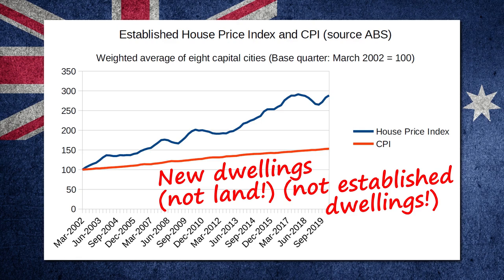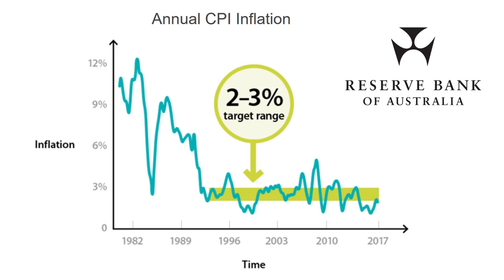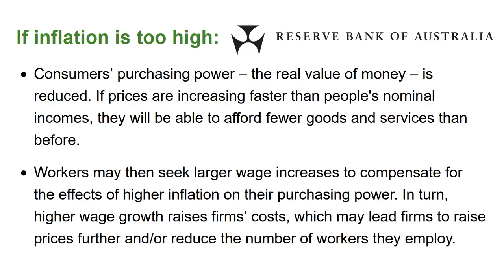So why is the government doing this? Why are they so desperate to exclude housing from inflation? I'll tell you why. Because if inflation increases, house prices will go down — and the government don't want house prices to go down. You see, the RBA have a target inflation range of 2–3%. If they included housing, then inflation would skyrocket. What happens when inflation skyrockets? According to the RBA, consumers' purchasing power goes down. Consequently, workers may then seek larger wage increases. Of course, we don't want that to happen. We don't want workers being able to afford housing.